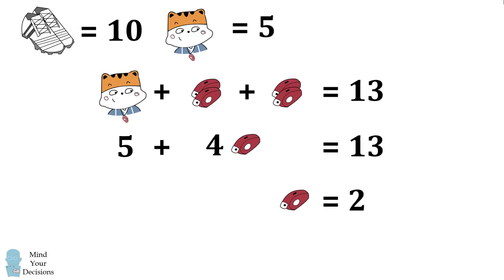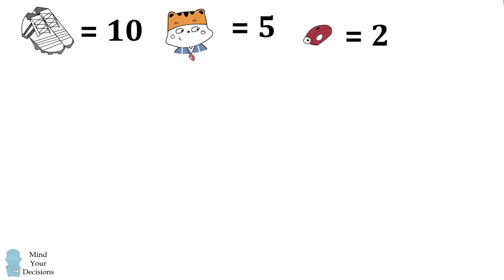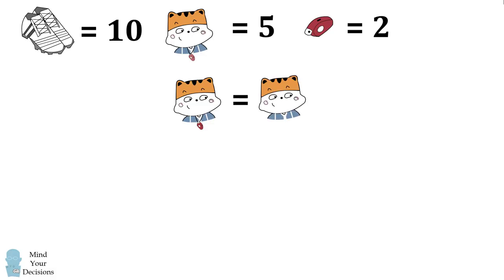So we're almost done, but we have to solve one more equation, and it's not even part of our original problem. We have a cat with the whistle is equal to a cat without a whistle, plus the whistle. So we know the value of the cat with the whistle is 5, and we know that the whistle is equal to 2. Therefore, we can solve that the cat without the whistle is equal to 3.